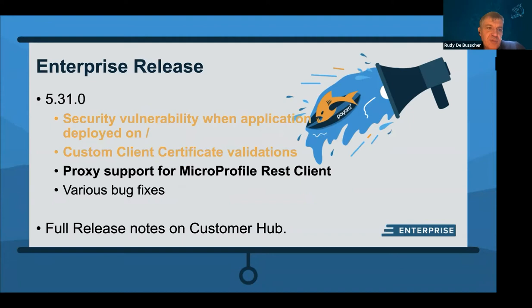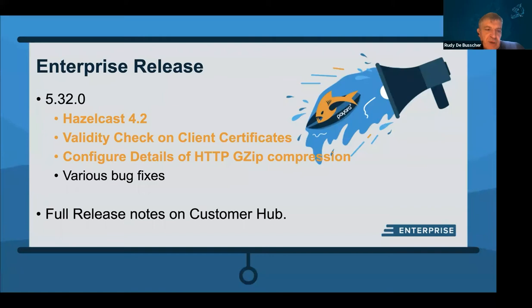We also have an enterprise release every month, so in September and October as well. The September enterprise release, version 5.31, has the same topics as the community one: the security vulnerability, the client certificates, and the proxy support. With the October enterprise release, version 5.32, we added the upgrade to HazelCast 4 — it's already available in Community, but now available in Enterprise also. For customers, they can look at the full release notes on our customer hub, including best practices and configuration articles.